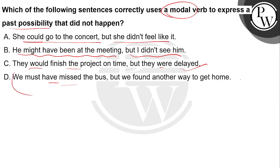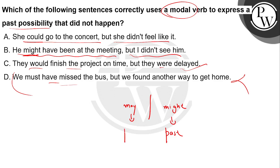That won't work with 'must.' You need to identify past possibility — something that didn't happen. Look carefully: 'might' and 'may' — 'may' is used in present tense, 'might' is used in past tense. So here, 'might have been at the meeting but it didn't happen' — that's your answer.